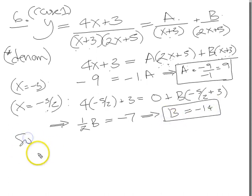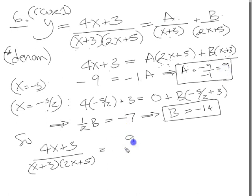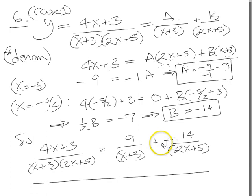So then the answer, 4x plus 3 over x plus 3 times 2x plus 5 equals A, which is 9, over x plus 3, plus B, which is minus 14, over 2x plus 5. There we go. And we know that a plus and a minus together is a minus, so I can just tidy that up here and combine them. I'll just write that as a minus.